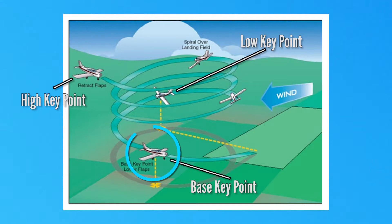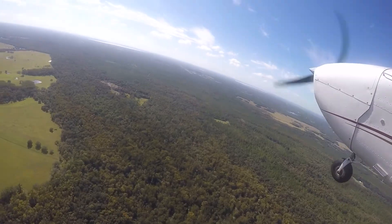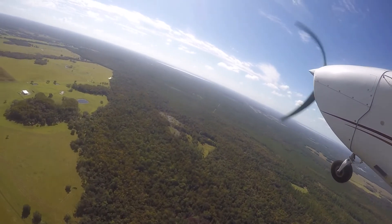From the low key point, the pilot performs a moderate bank turn towards the base key point, which is 400 to 500 feet above ground level. This base leg should be flown closer than the standard base leg in the traffic pattern.